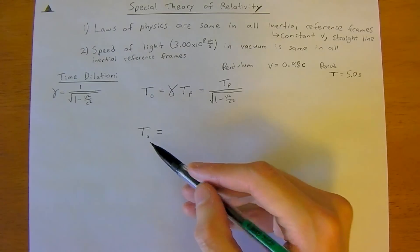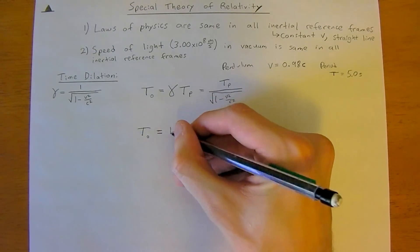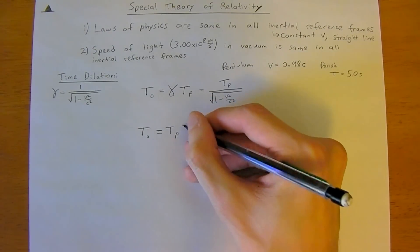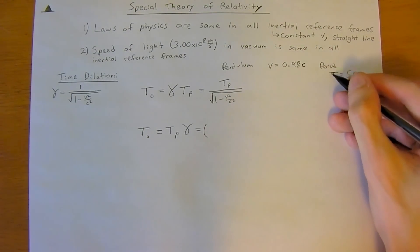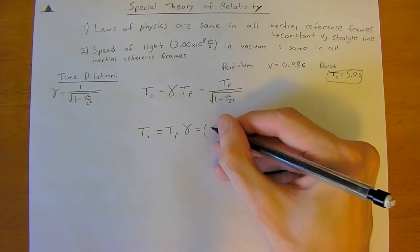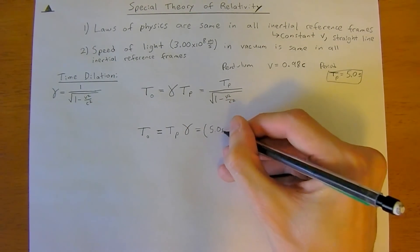So, that will be equal to the proper time times gamma. And so, the proper time is the person on the spaceship, they measure the period to be 5.0 seconds.